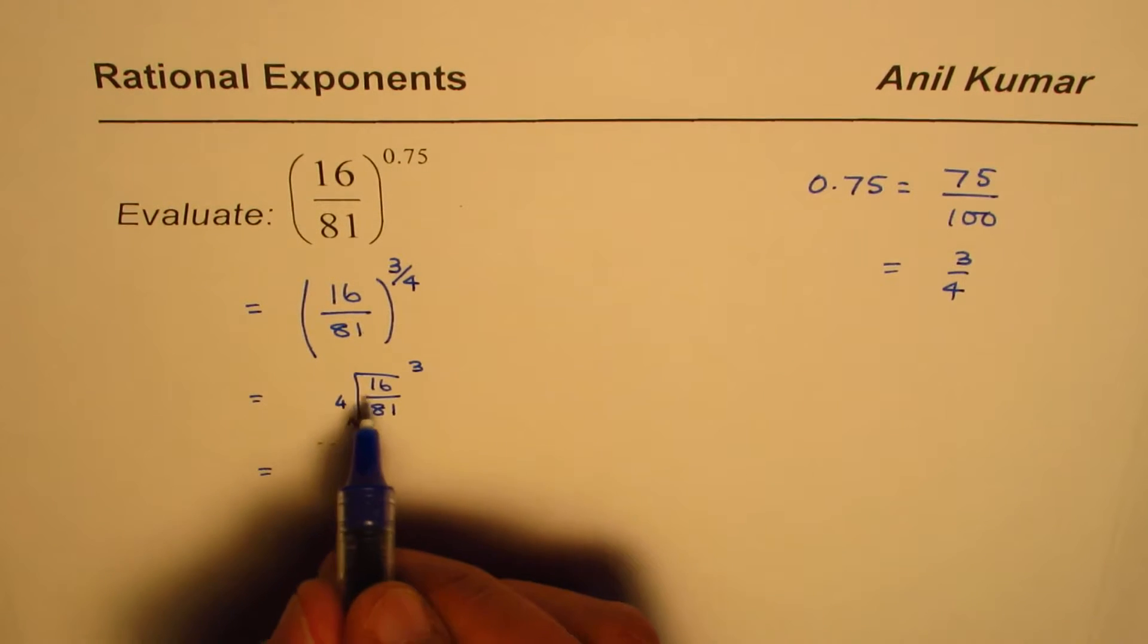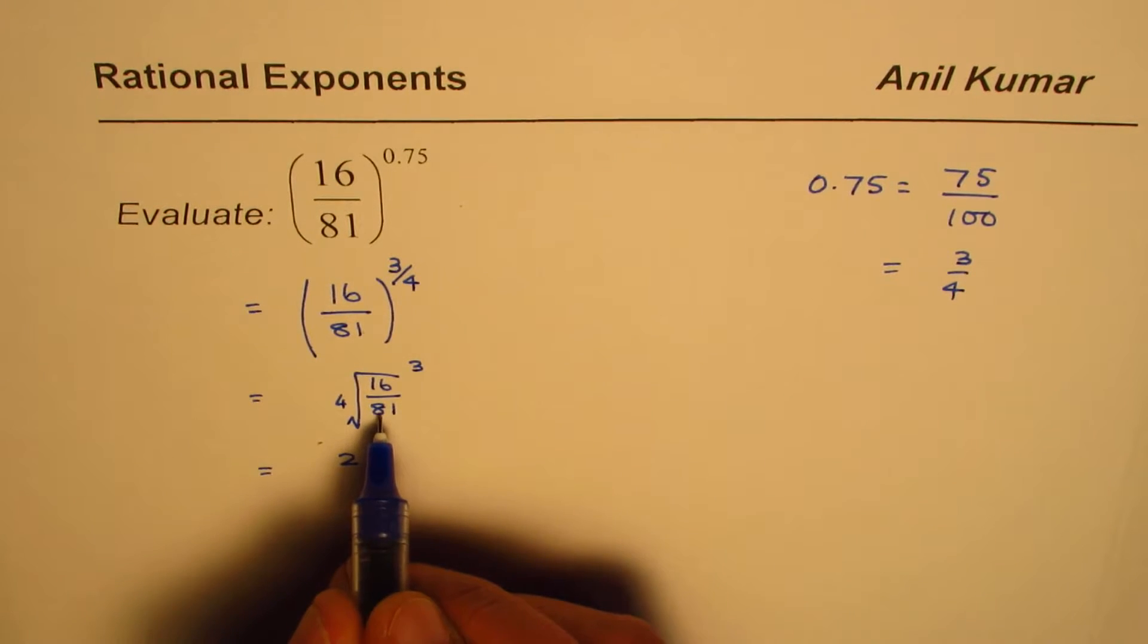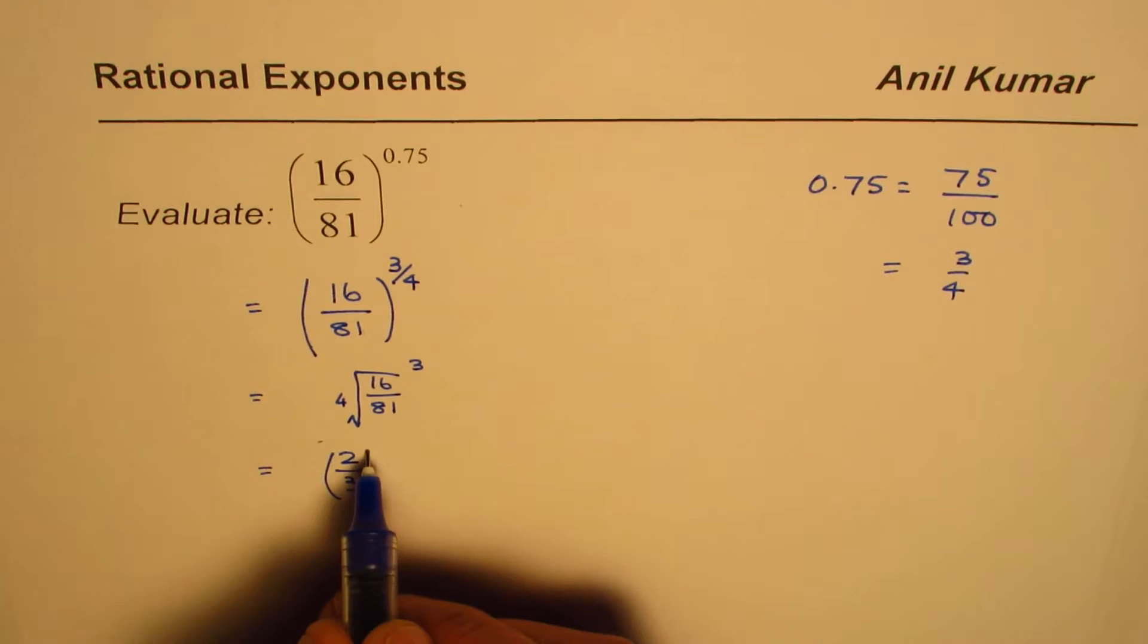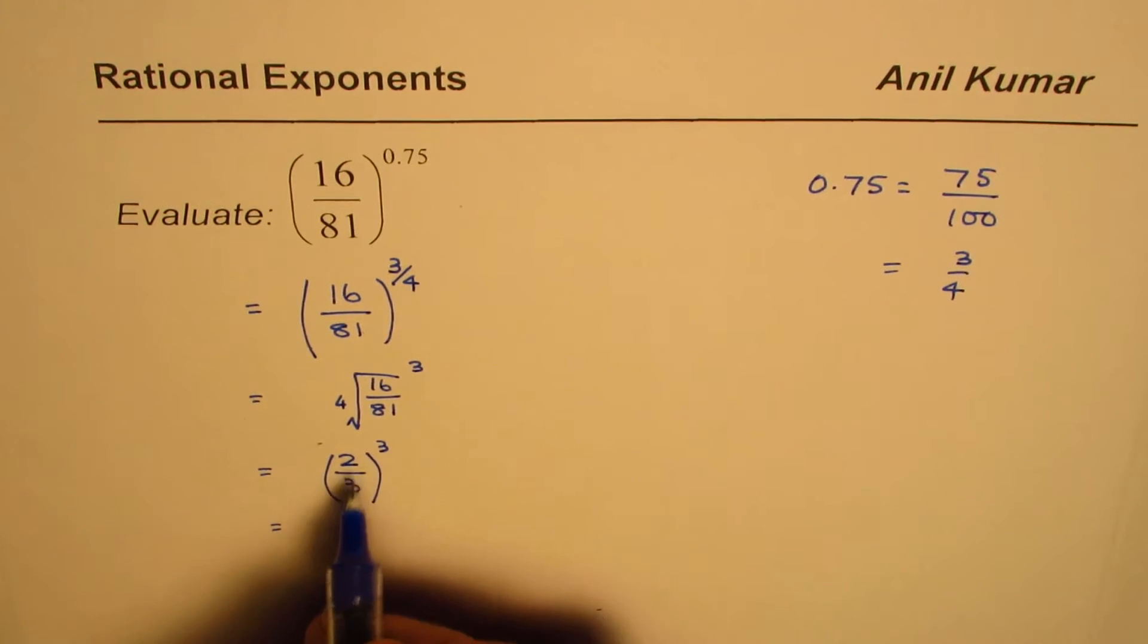The fourth root of 16 is 2. Fourth root of 81 is 3. So we get 2 over 3 whole cube. 2 cube is 8 and 3 cube is 27.